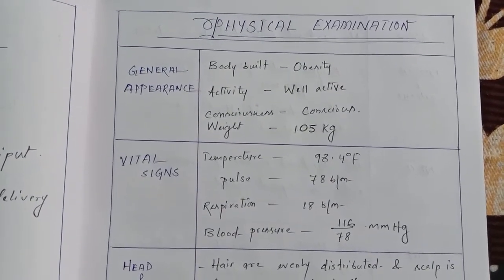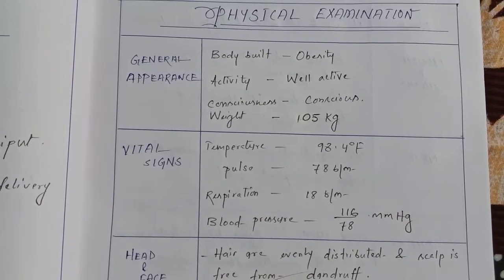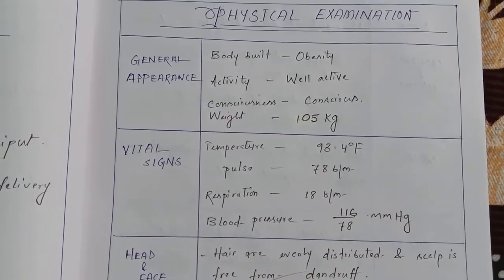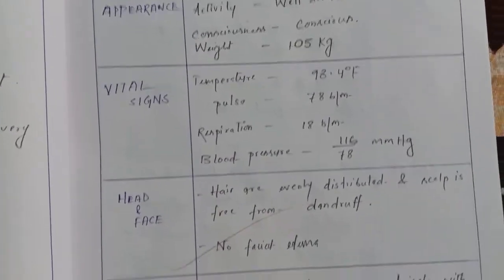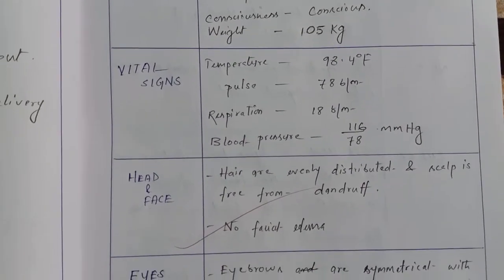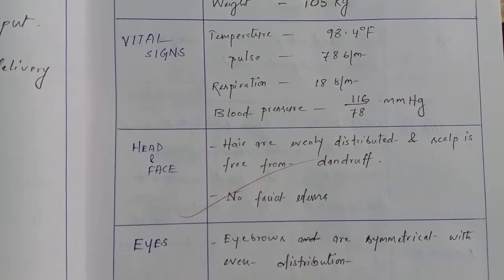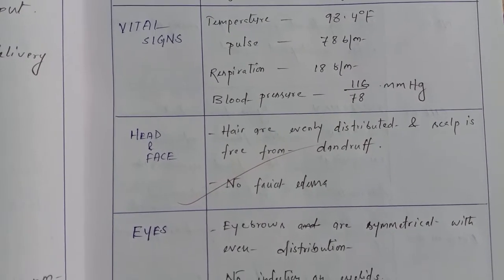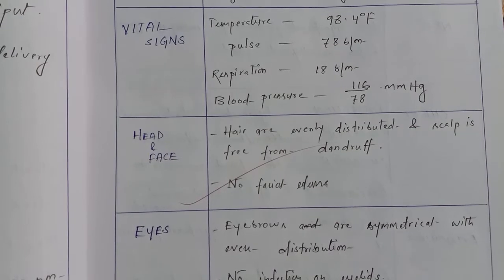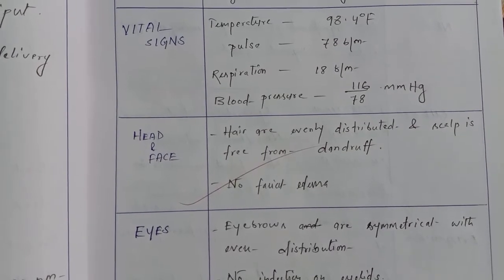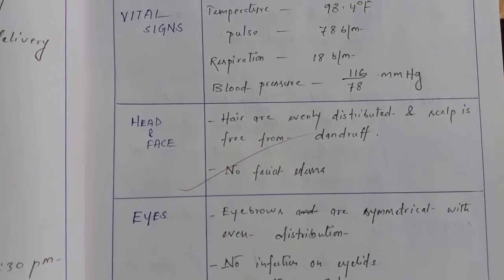Physical examination: general appearance — body build is obese, activity very active, consciousness patient is alert. Weight 105 kg. Vital signs: temperature 98.4°F, pulse 78 beats per minute, respiration 18 breaths per minute, blood pressure 116/78 mmHg.